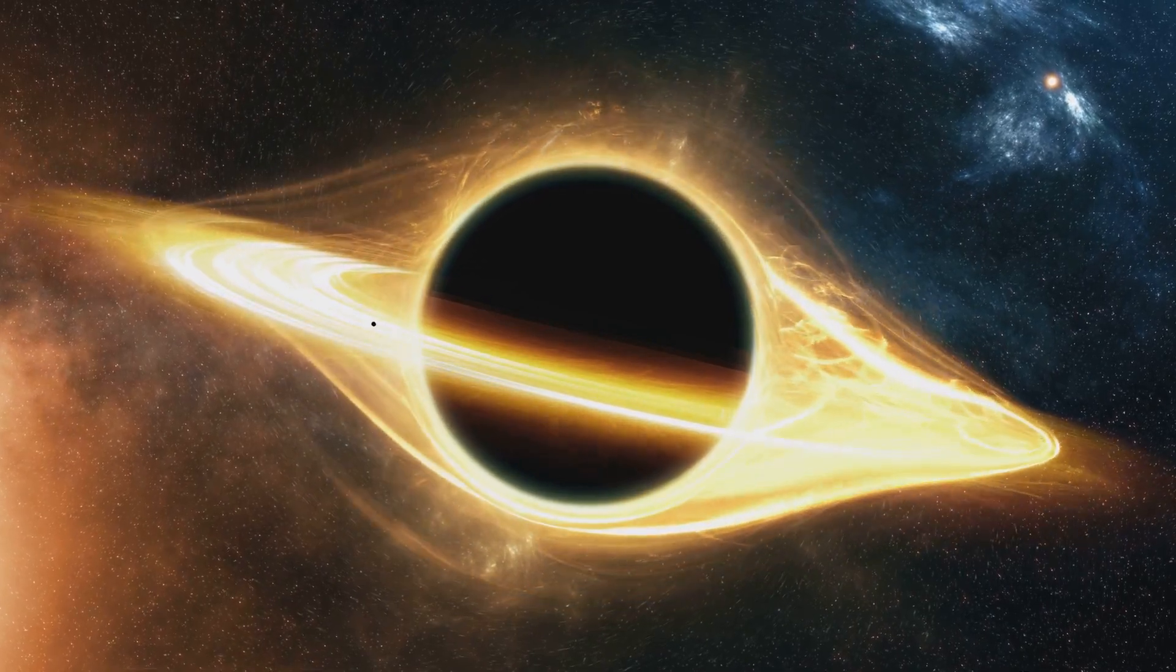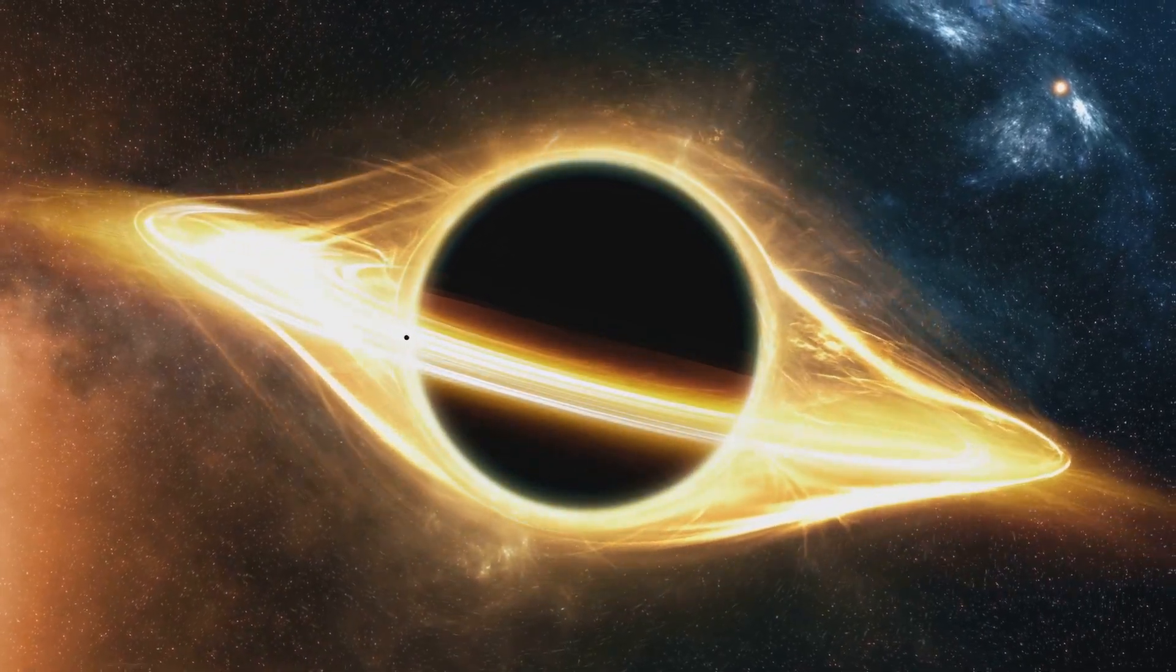Massive objects create a sort of gravitational well, a curvature in space-time, and anything caught in this well, including light itself, has to follow this curved path. It's within these warped and twisted regions of space-time that the possibility of time bubbles emerges.